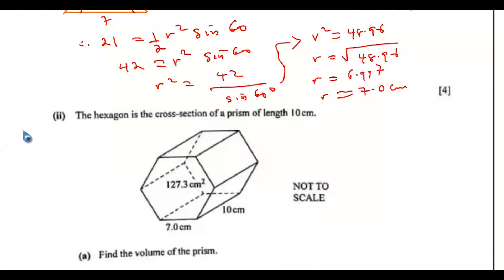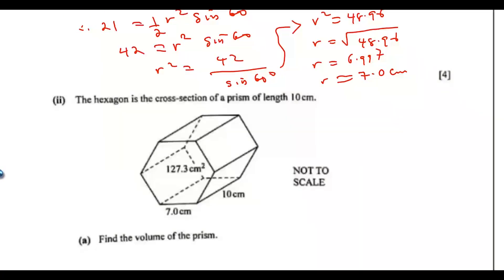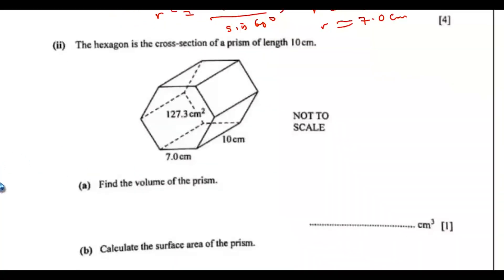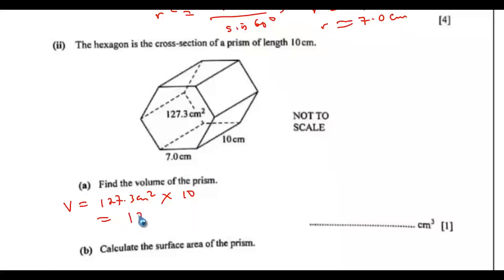The hexagon is the cross section of a prism of length 10 centimeters. Find the volume of the prism. The volume of the prism equals the cross-section area multiplied by the length. So the volume equals 127.3 cm squared times 10, which gives 1273 cm cubed.